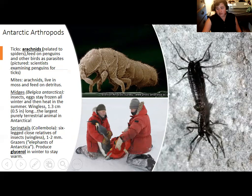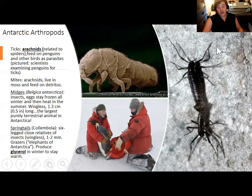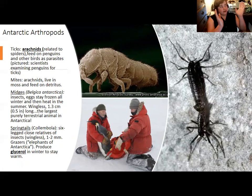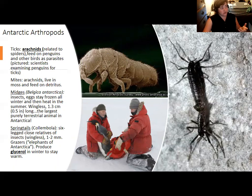The midge is the largest land animal native to Antarctica. It is a wingless insect, 1.3 centimeters long — a giant by Antarctic standards. It survives by keeping its eggs frozen all winter. Springtails do something similar. They are not technically insects but a close relative — they have six legs but no wings and are a sister group to insects. They live in Antarctica grazing on moss and survive the winter by producing glycerols, which are compounds similar to antifreeze, so they essentially use biological antifreeze to avoid freezing through the winter.